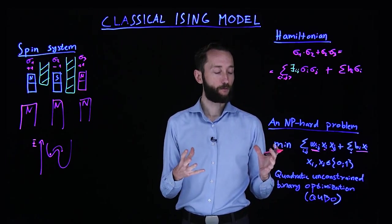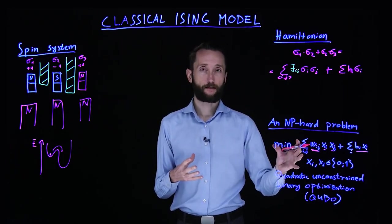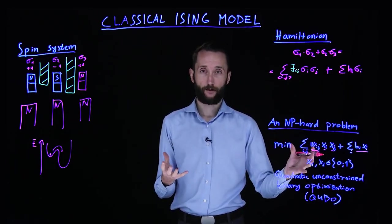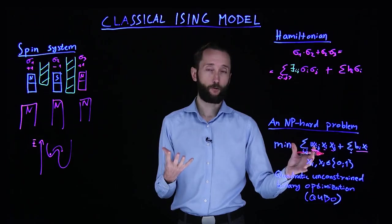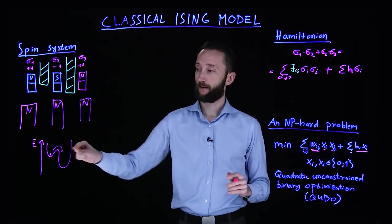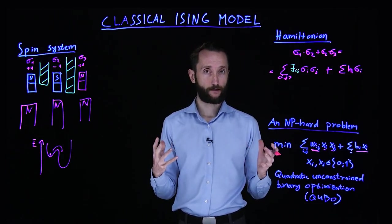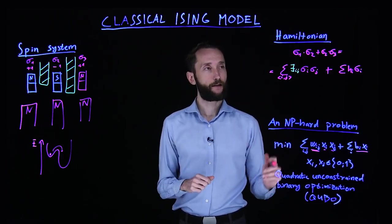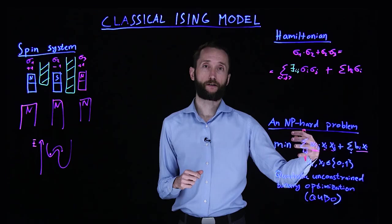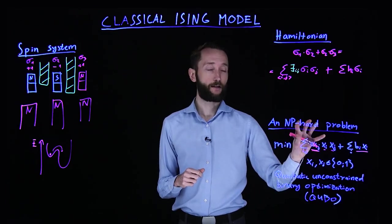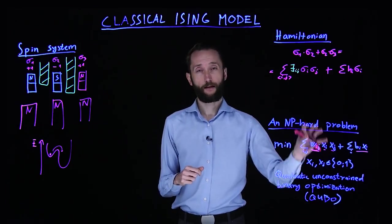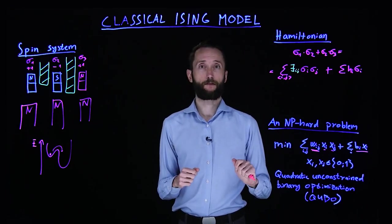They have coefficients. And you also have a bias term affecting individual random variables. And on a classical computer, in the general case, this takes exponentially many evaluations to find the global optimum. Because you have the same problem. You would otherwise get stuck in some local optimum. So there is this very natural correspondence between what is computationally hard and what's physically difficult to solve.